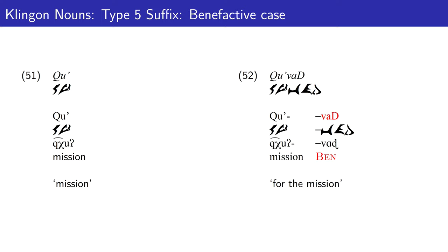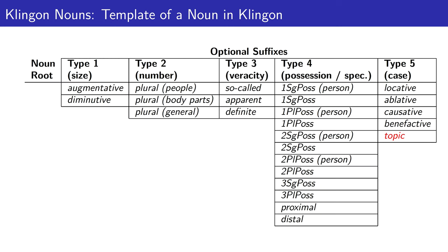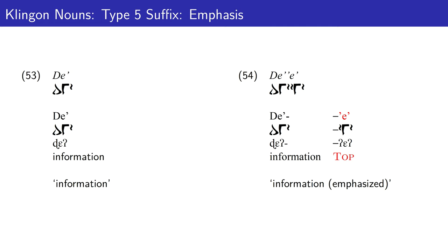The fourth type 5 suffix is benefactive case, used to indicate something done 'for the mission'. The final type 5 suffix marks the noun root as emphasized or the topic of the sentence. Here we have the word for information followed by the topicalizing suffix — the result means 'information', implying that it is emphasized.